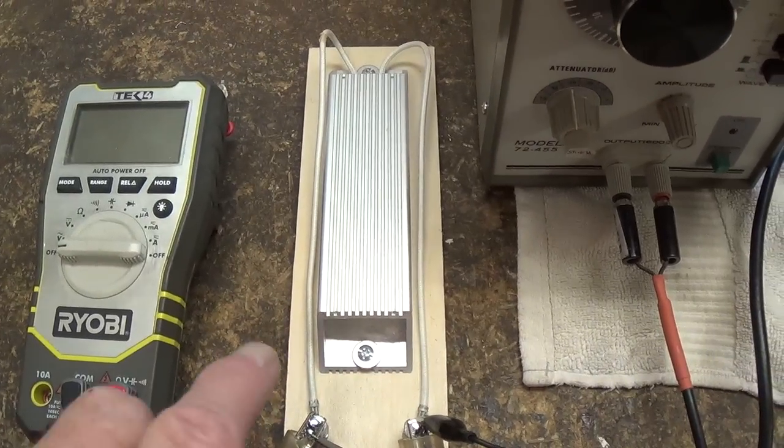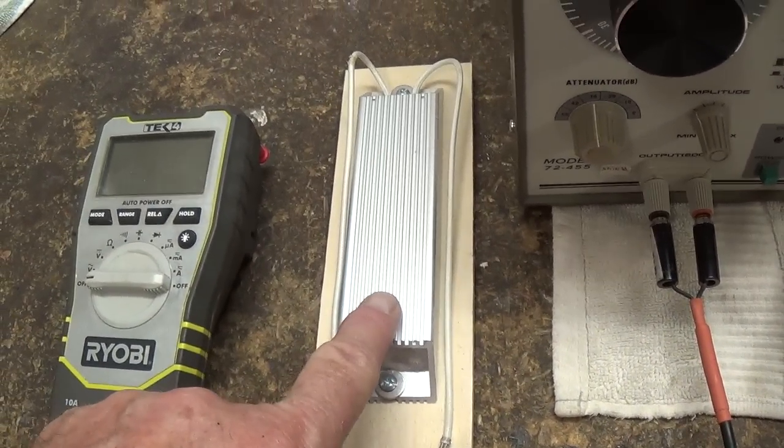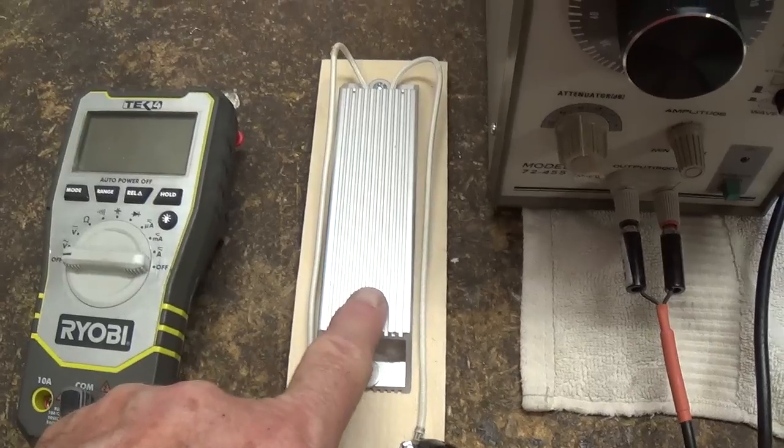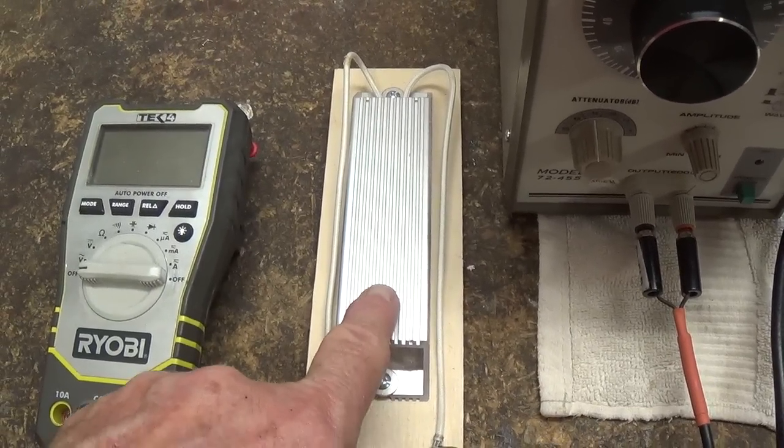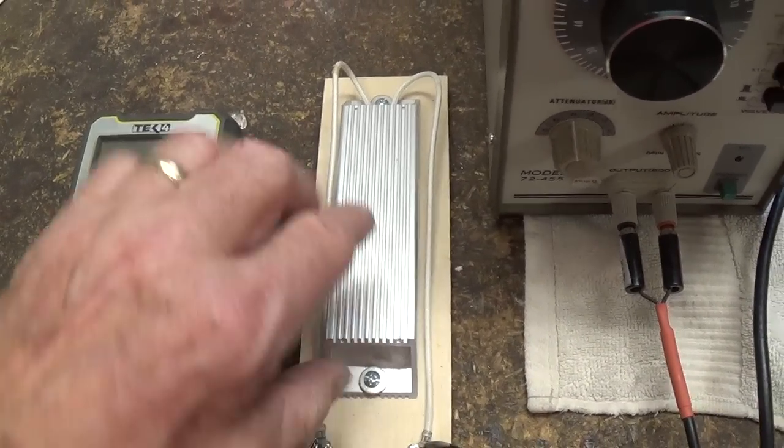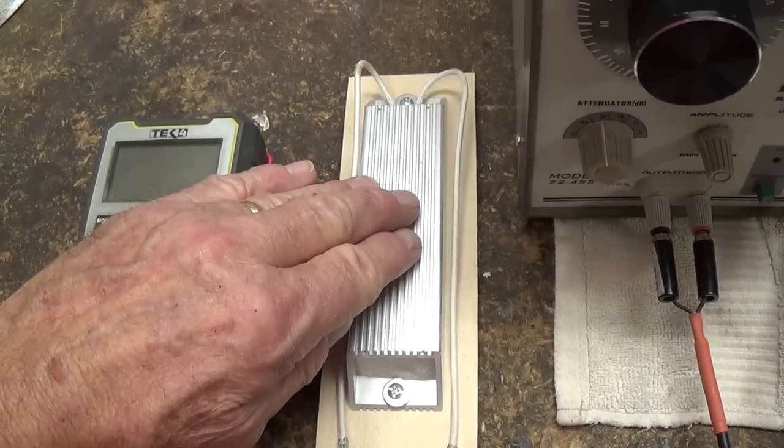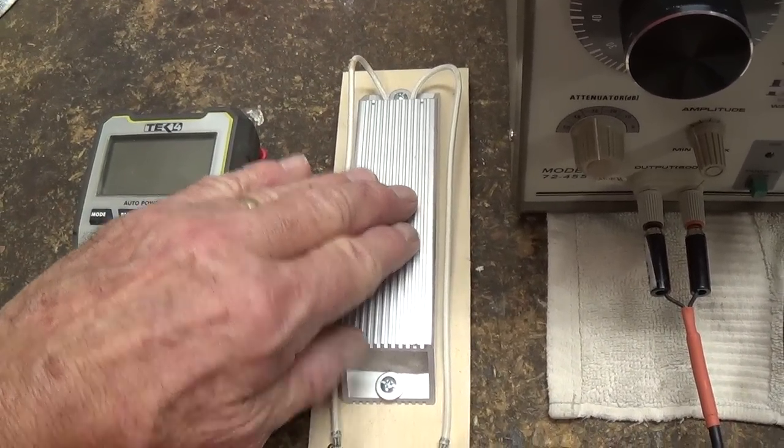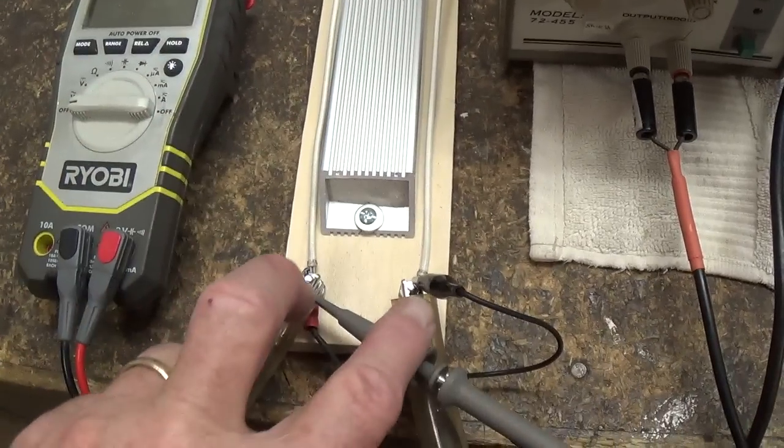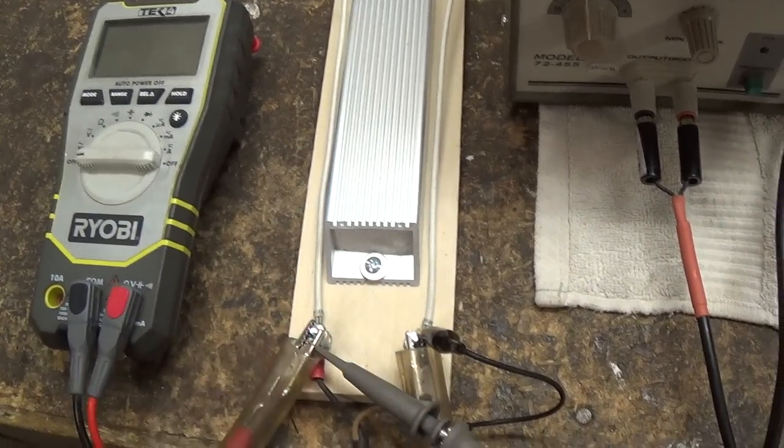Since you have to have some sort of load attached to the output of the amplifier, and we don't want to use a speaker because a 1000 cycle per second tone at full volume would not be a pleasant experience, we're going to use what is called a dummy load. This is an 8-ohm, 100-watt heat dissipating resistor. So the output of the amplifier is going to go to this instead of to a speaker.